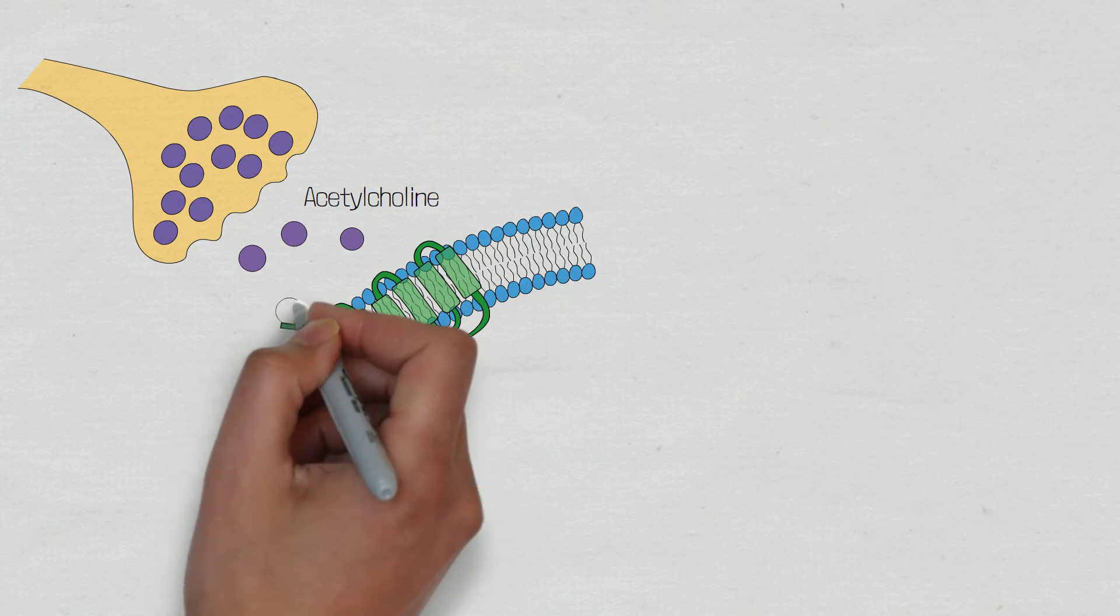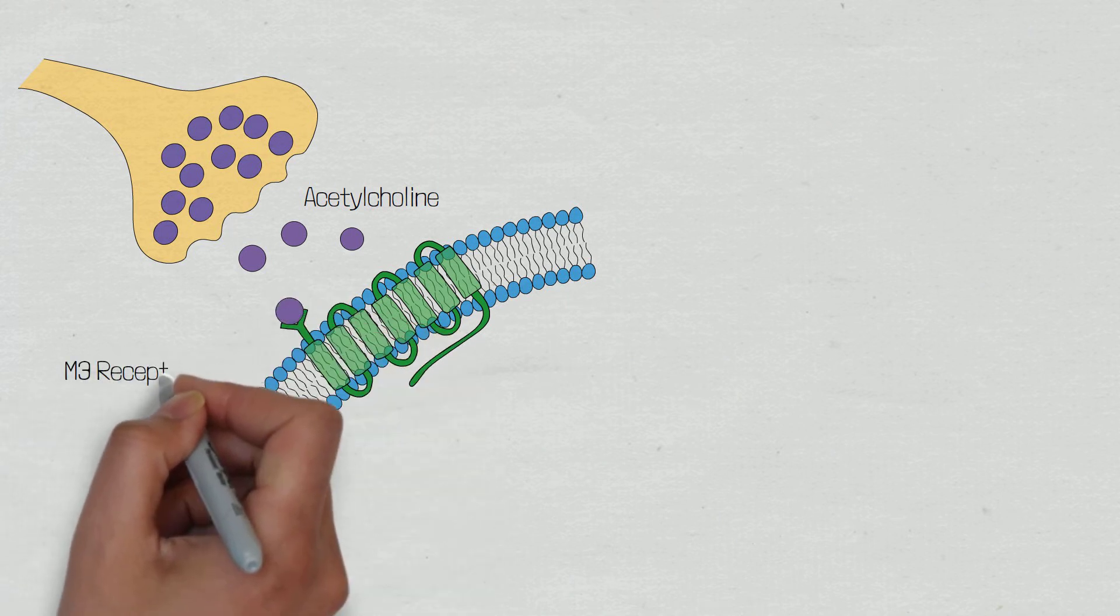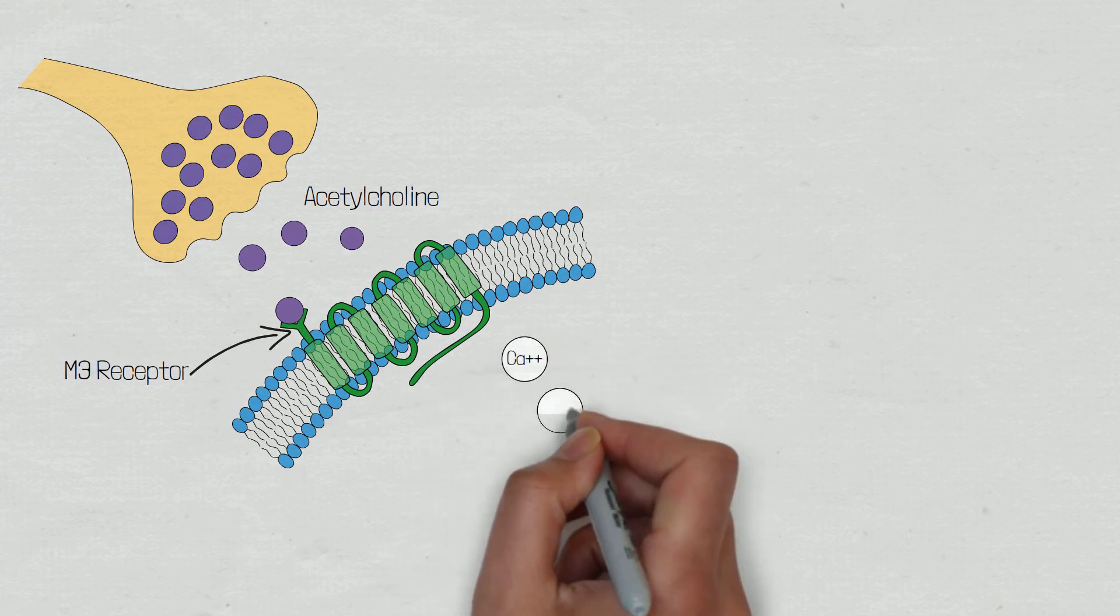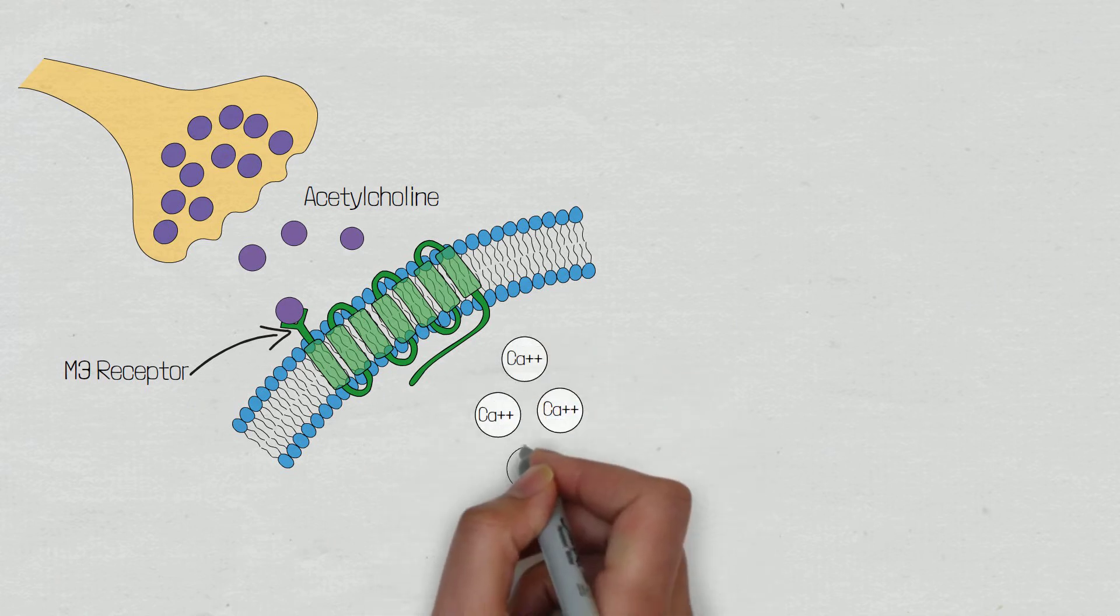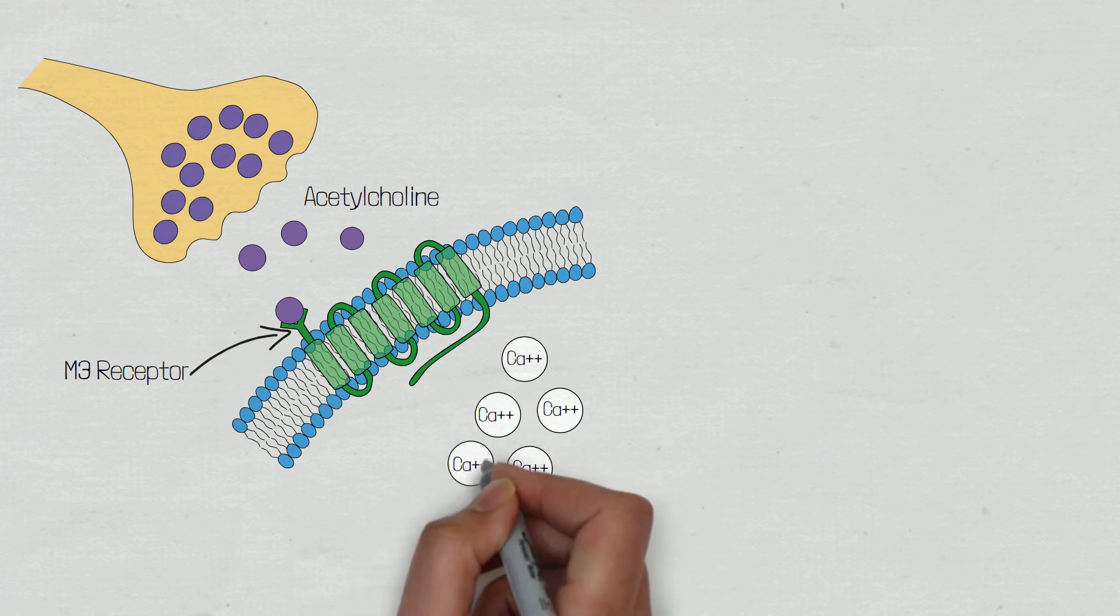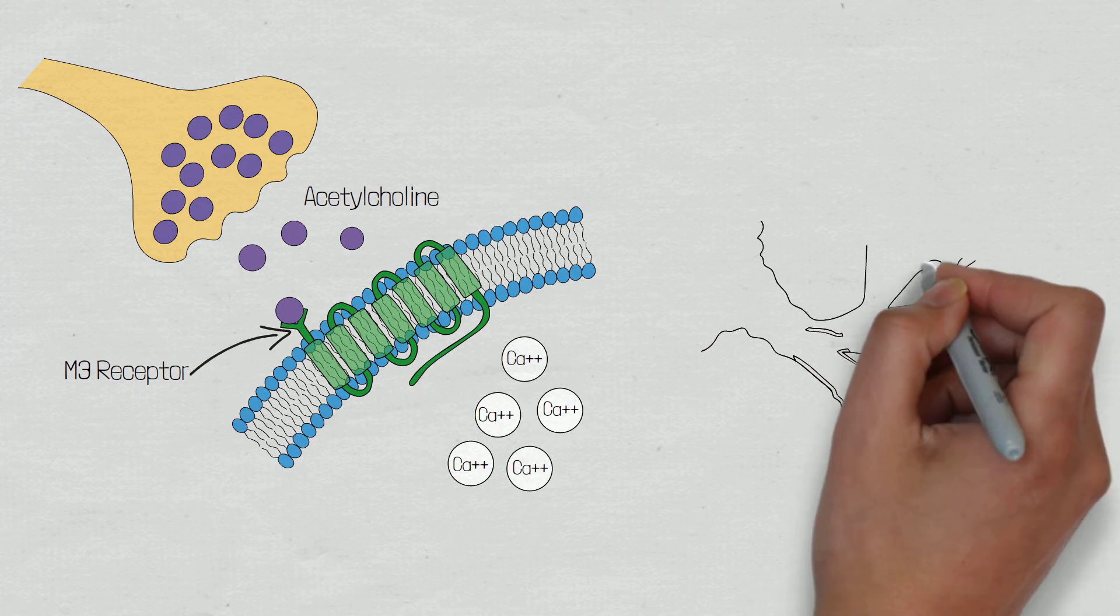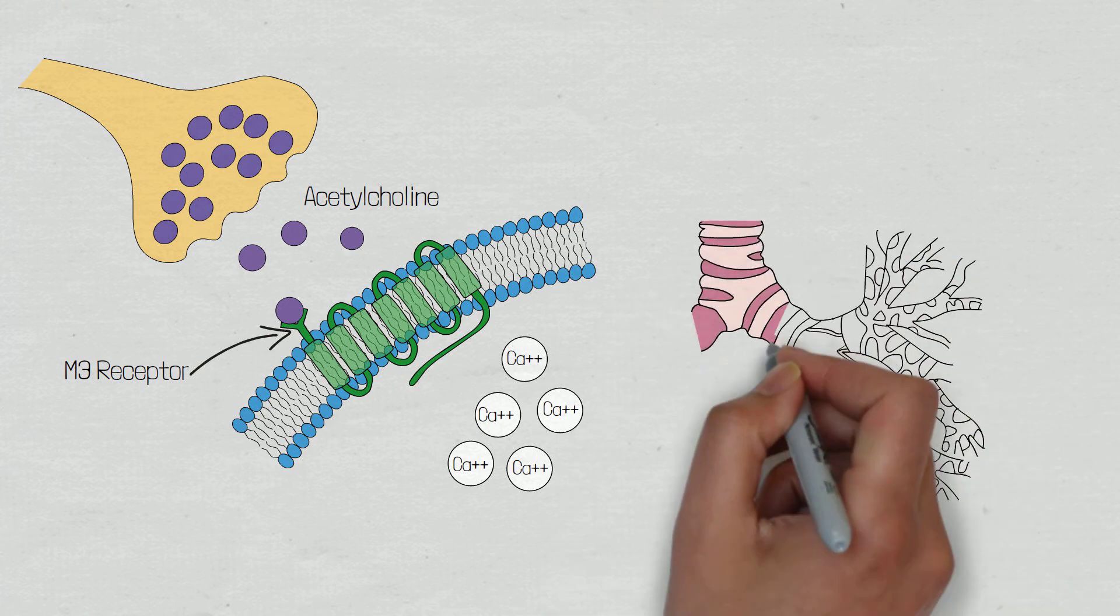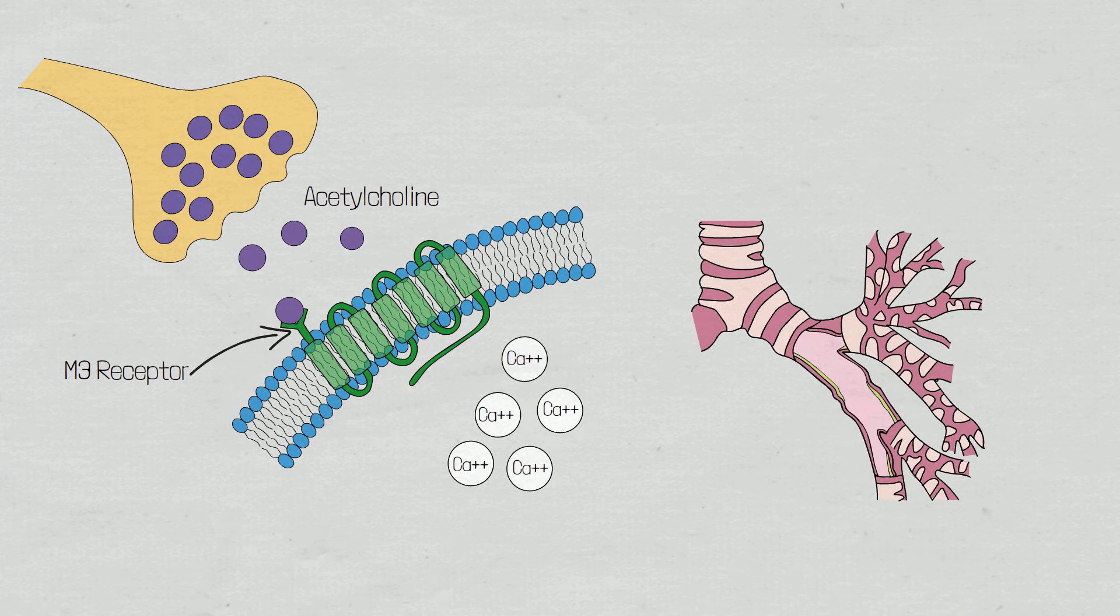This intracellular cascade causes a rise in intracellular calcium, which causes muscle contraction by increasing actin and myosin cross-bridge formation. Therefore, muscarinic 3 receptors cause bronchial constriction when the neurotransmitter acetylcholine is bound to it.